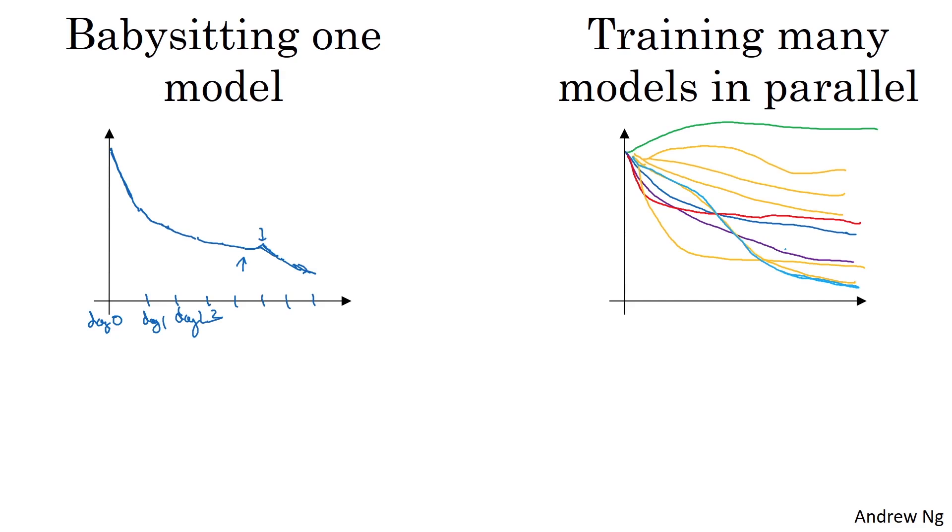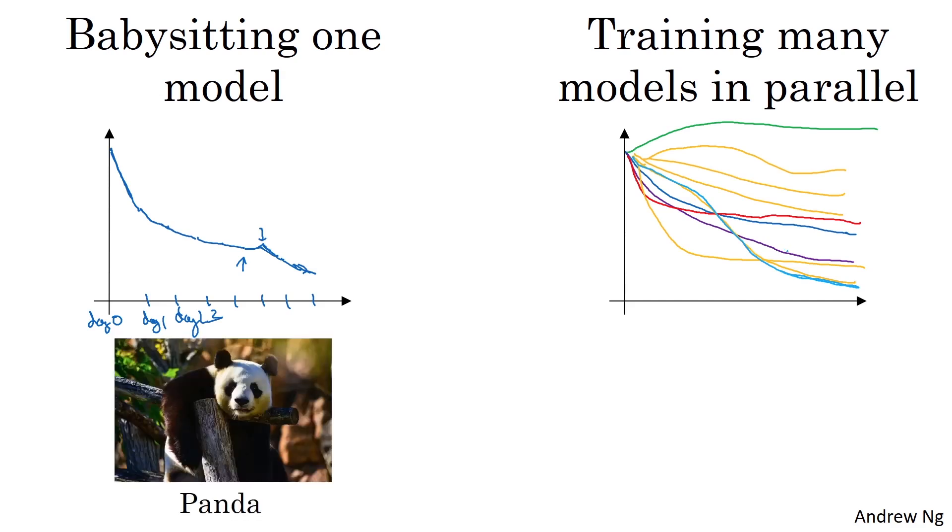So to make an analogy, I'm going to call the approach on the left the panda approach. When pandas have children, they have very few children, usually one child at a time. And then they really put a lot of effort into making sure that the baby panda survives. So that's really babysitting one model or one baby panda.